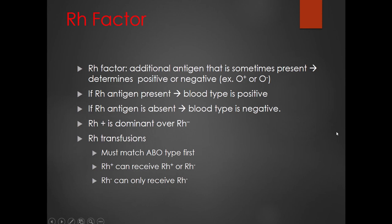We also need to discuss the RH factor — an additional antigen that is sometimes present on red blood cells. Most people have it, but some don't. This determines whether you have positive or negative blood. If the RH antigen is present, you have RH positive blood; if not, you have RH negative blood. RH negative is much less common because RH positive is dominant. When giving transfusions, you must first match the ABO type, regardless of the RH factor. RH positive people can receive from RH positive or RH negative people, while RH negative people can only receive RH negative blood.